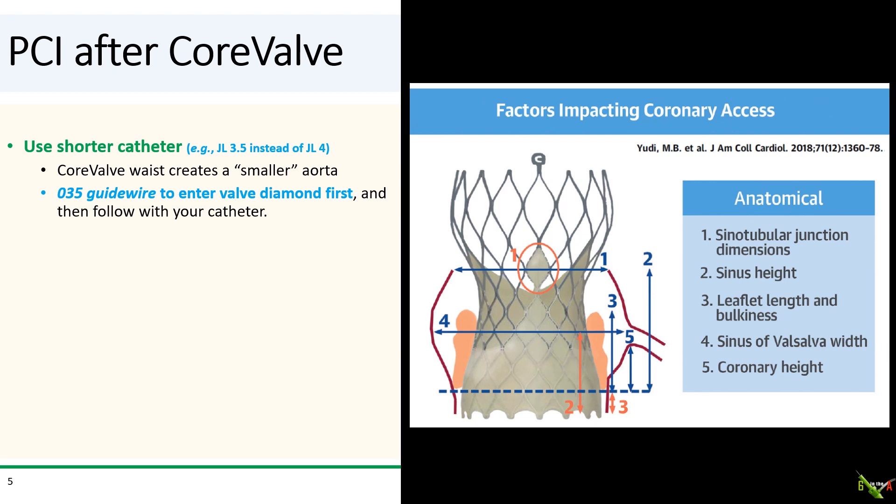First, choose a catheter one size smaller than your standard size, because the waist of the CoreValve effectively creates a smaller effective aortic diameter. So use a JL 3.5 instead of a JL 4, or an EBU 3 instead of an EBU 3.5.